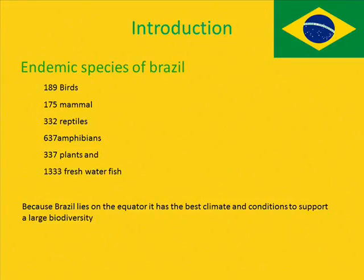The species are comprised of a multitude of rare and endemic species which total up to 189 birds, 175 mammals, 332 reptiles, 637 amphibians, 337 plants, and 1,333 freshwater fish which are endemic to Brazil. With this abundance in biodiversity and endemic species, there is a responsibility placed within Brazil to conserve these species and ensure their survival.